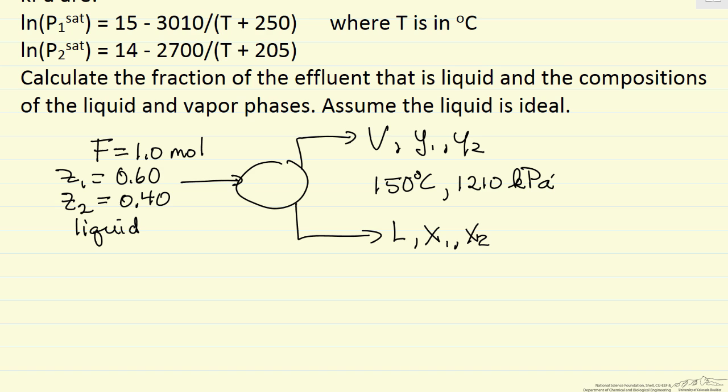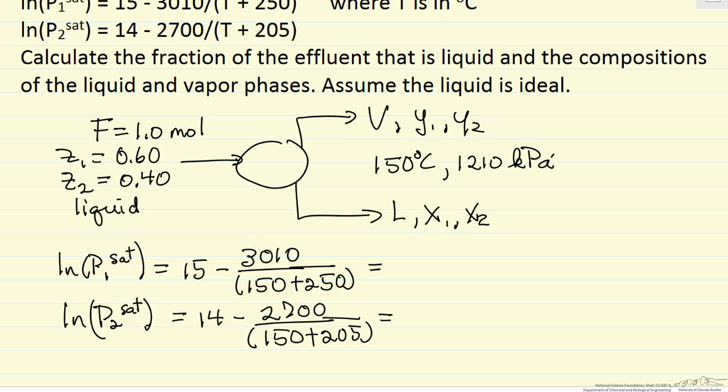To apply Raoult's law we're going to have to use saturation pressures, so I'm going to rewrite these equations for saturation pressures and substitute in the temperature in degrees centigrade, 150 degrees C. Notice these are natural log - often Antoine's equation can be log base 10, but in this case they're natural log. I've substituted in 150 degrees C, and I get the log of the saturation pressure 7.475, which means if I take the exponent of both sides, I can calculate P1^sat, and that's 1763 kilopascals. Do the same thing for saturation pressure 2, which gives 598 kPa.